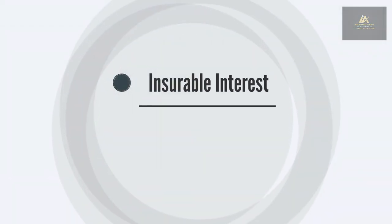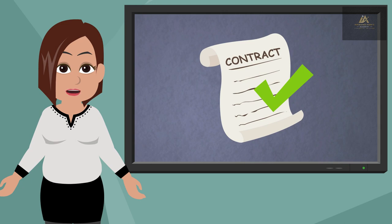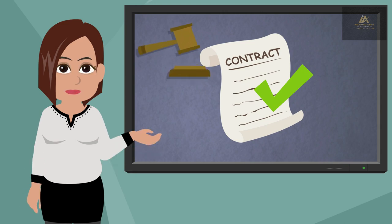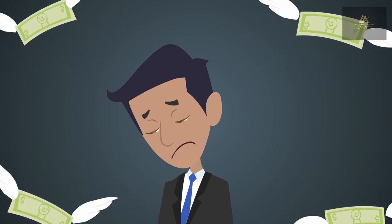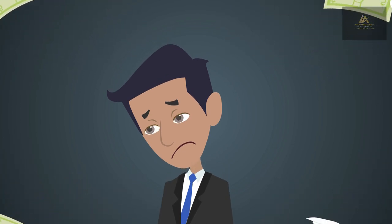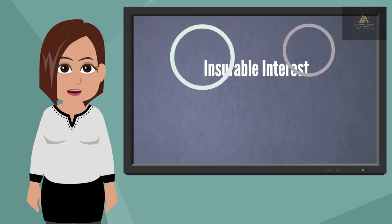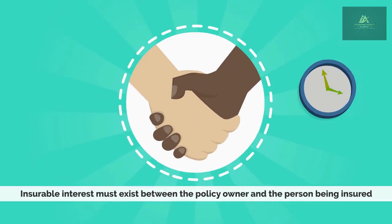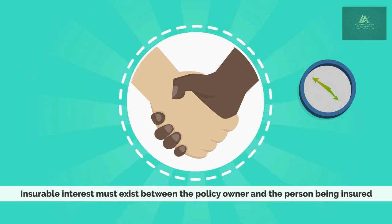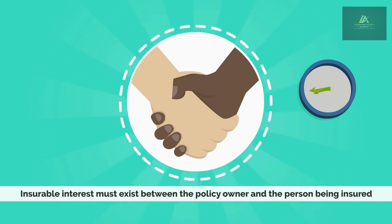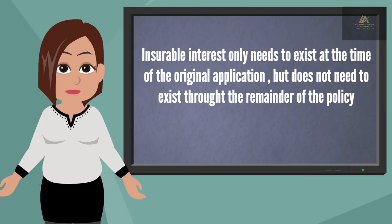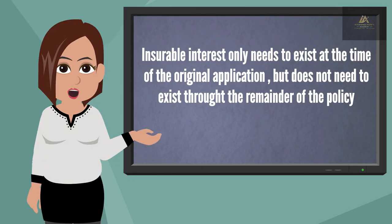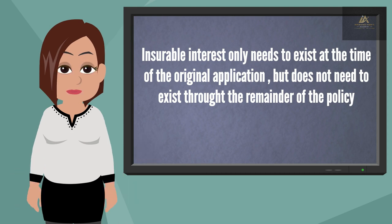Insurable interest: insurable interest is the most important aspect for establishing a legal insurance contract. To purchase insurance, the policy owner must face the possibility of losing money or something of value when a loss happens — this is called insurable interest. In life insurance, insurable interest must exist between the policy owner and the person being insured at the time of the application. Please note that insurable interest only needs to exist at the time of the original application but does not need to exist throughout the remainder of the policy.